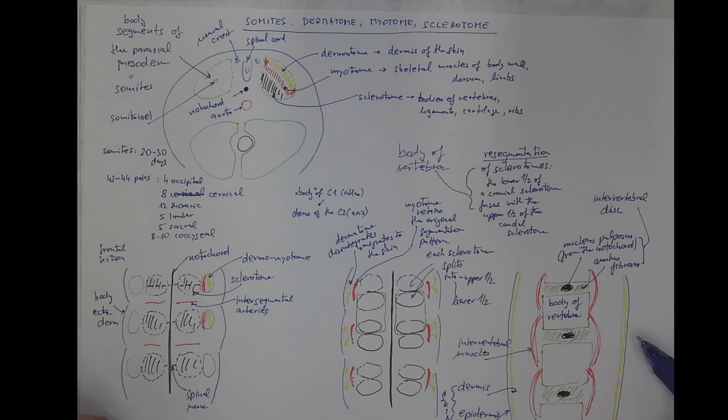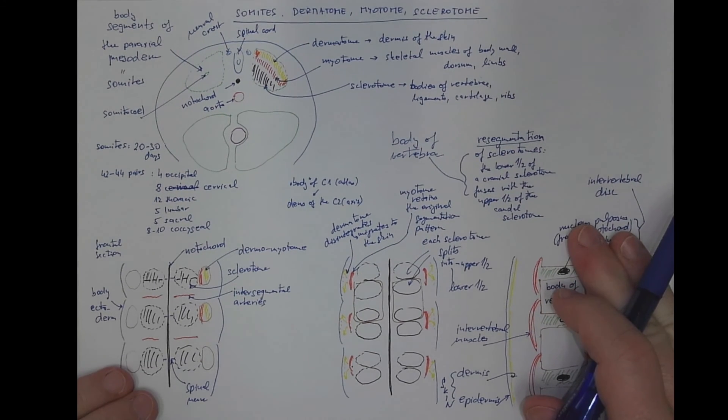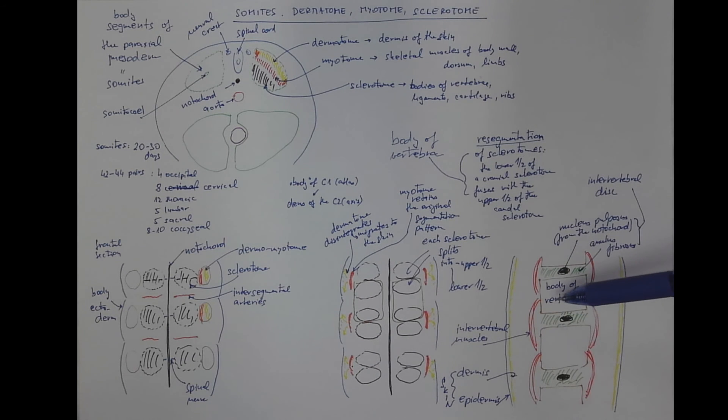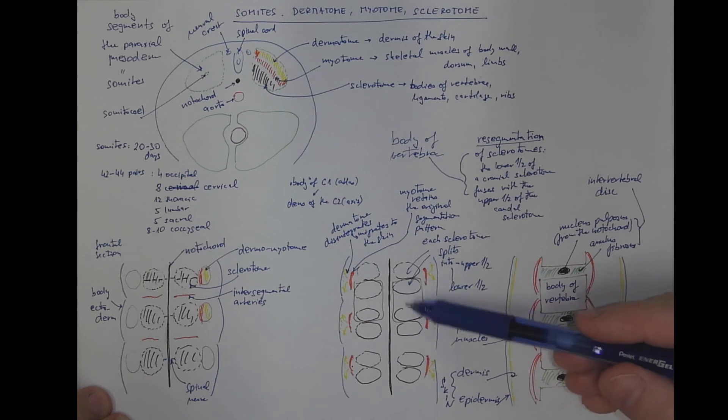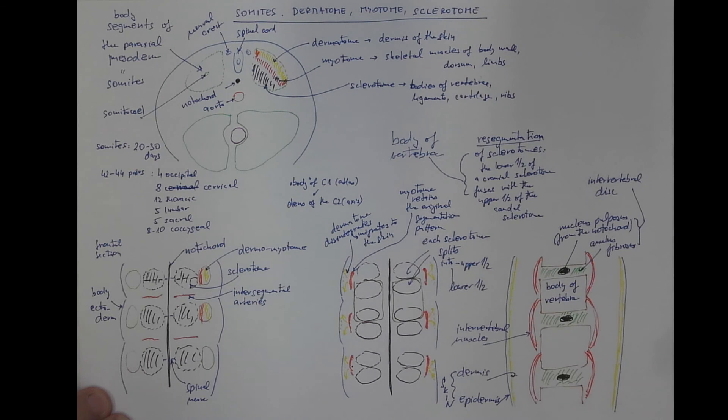And two more remarks: Why do we care about the resegmentation? It explains a lot from the anatomy but also there might be developmental defects such as half of the vertebrae called hemivertebra, or different shapes of the bodies of vertebrae resulting from incomplete fusion of these bodies.